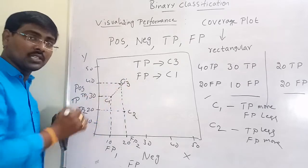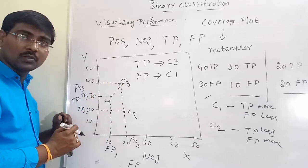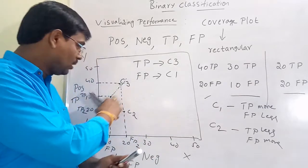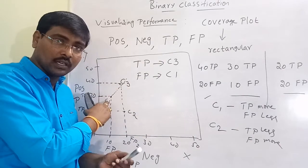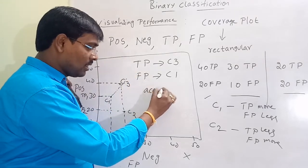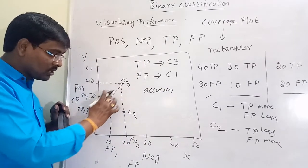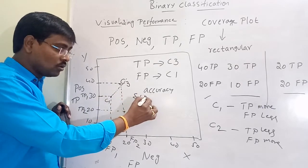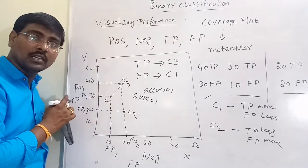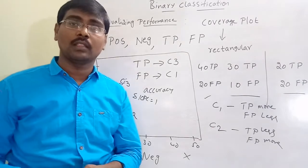If you draw a line between C1 and C3, observe that the slope of the line is 1. If you draw a line between two classifiers and the slope of the line is 1, then the accuracy of these two classifiers is the same. By this drawing, we are visualizing the performance of the classifier. Thank you.